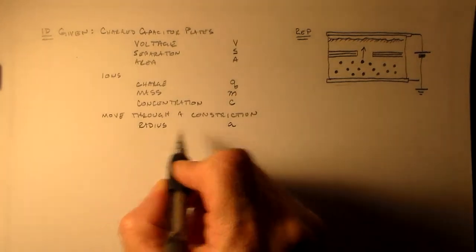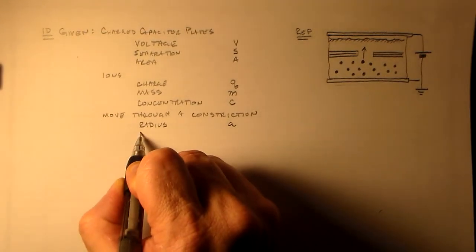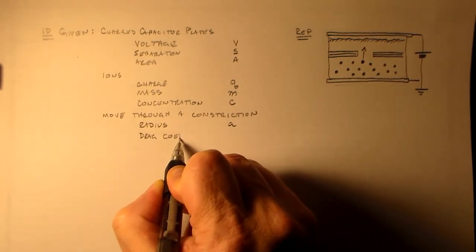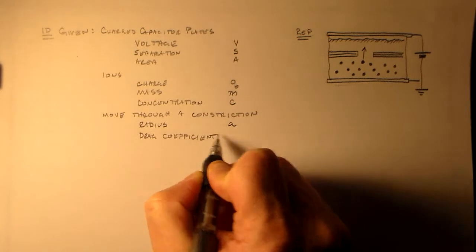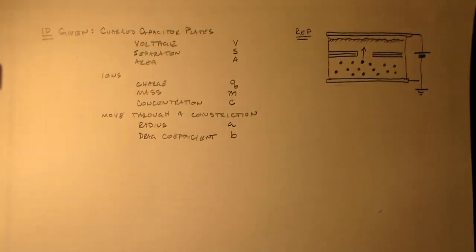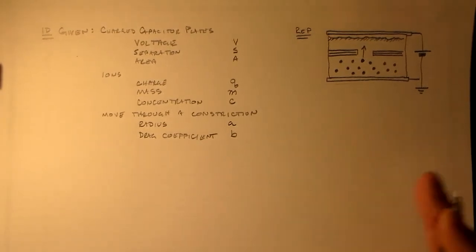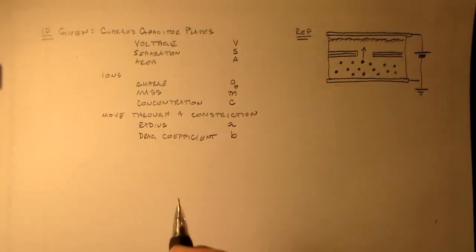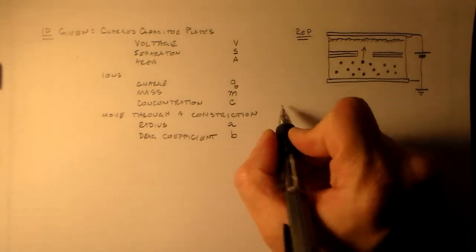Anything else we need to know? Anyway, they move through that constriction, they'll have to have a drag coefficient, B. And that way we'll be able to sort of equalize everything. Actually, we could equalize everything just with the electric field, but why make things easy?